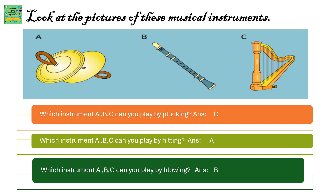Which instrument — A, B or C — can you play by hitting? It's A. And the third: which instrument A, B and C can you play by blowing? It's B.